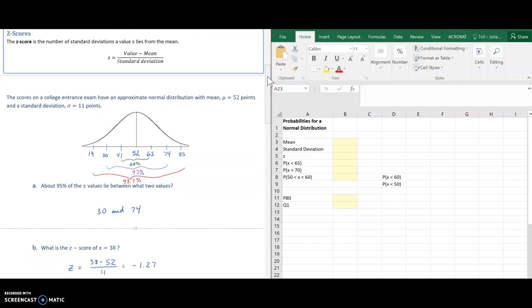So I got negative 1.27. Let me show you how we do that in Excel over here on the right. So I'm going to stick in the mean was 52, standard deviation 11. And if I want my Excel to calculate the z-score for me, I start with that equal sign. I need it to subtract 38 minus 52 before dividing. So to get my order of operations correct, I've got to put parentheses around that in Excel.